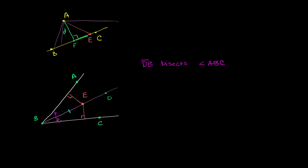So you can invoke — using this angle, that angle, and this side — that these two triangles are going to be congruent to each other. So we could say — let me put some points here; let's call this F and this G — that triangle EBF is congruent to triangle EBG.